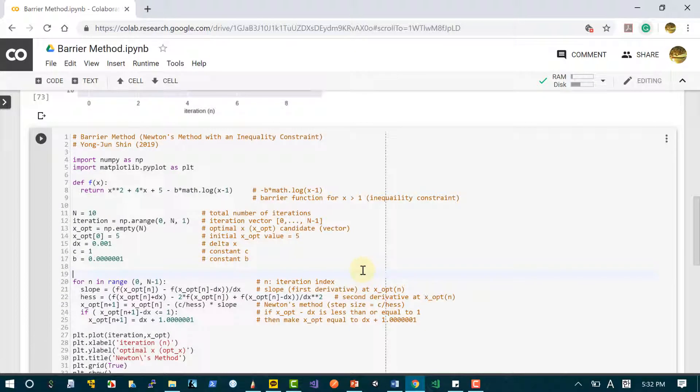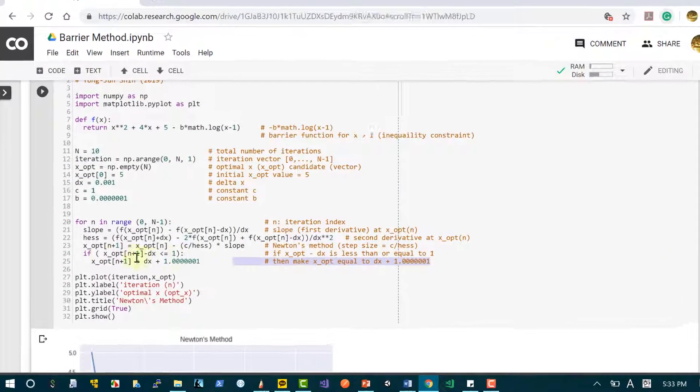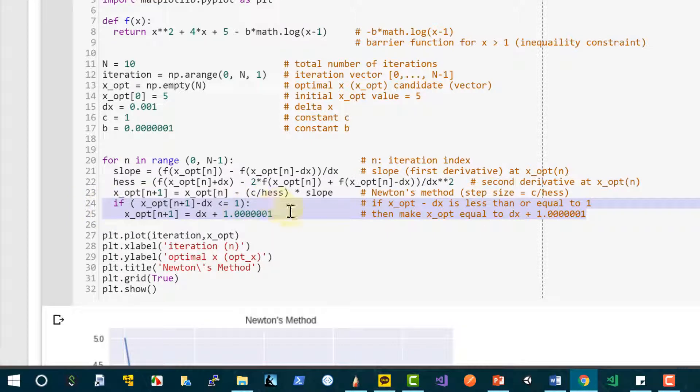Here we are using a barrier method for Newton's method. The code is very similar to the previous one. Again, we are adding these two lines of code to make sure that x minus 1 is greater than 0.